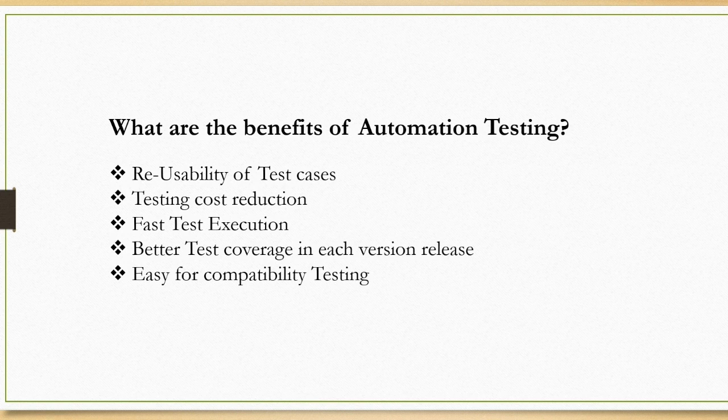The next benefit is testing cost reduction. You have to put human efforts only one time to automate your software testing process; later on the automation tool will work for you in place of human resources. The next benefit is fast test execution — manual software testing is time consuming, whereas automation tests are faster and take less time to execute compared to manual test execution.